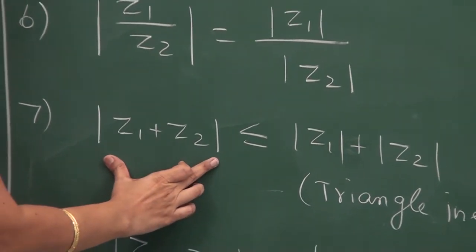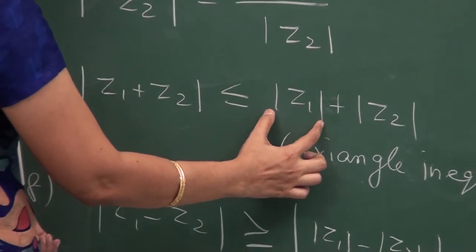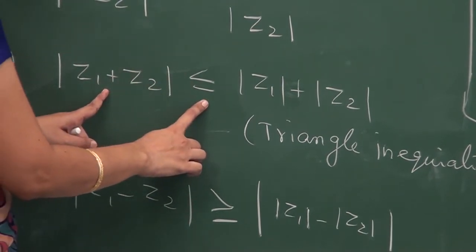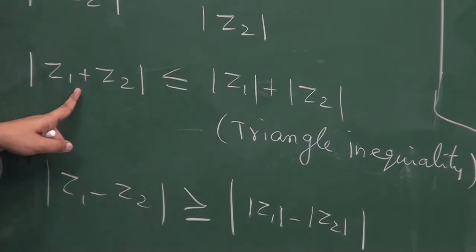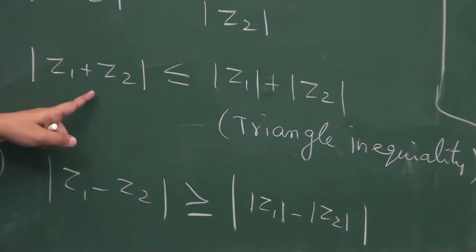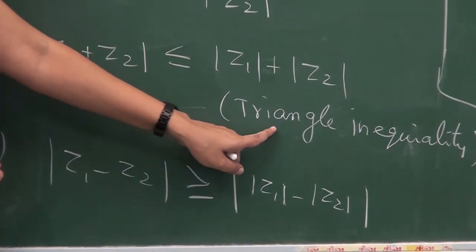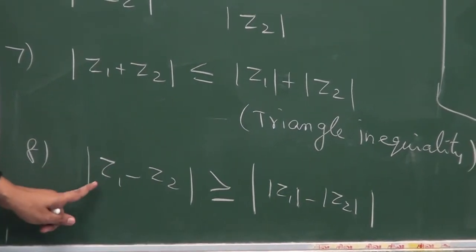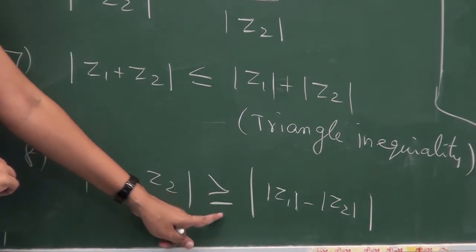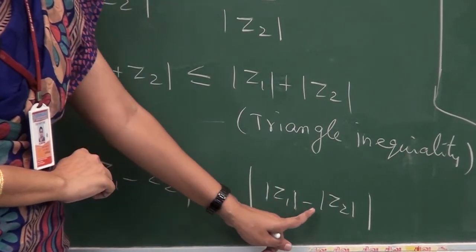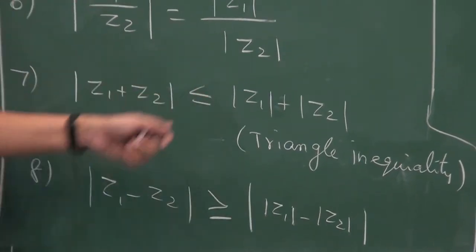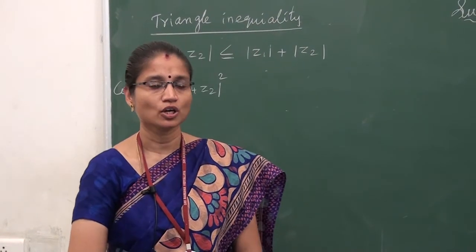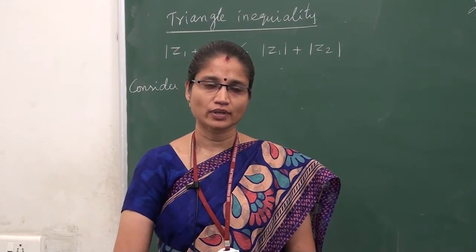Modulus of z1 plus z2 is less than or equal to modulus of z1 plus modulus of z2. That is, the modulus of the sum is always less than or equal to the sum of their individual moduli. This property is called the triangle inequality of complex numbers. The proof part is very important — it may be asked as a three-mark question. Let us see the proof.